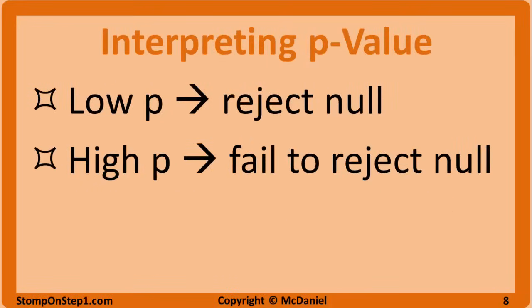The p-value is a measurement to tell us how much the observed data disagrees with the null hypothesis. When the p-value is very small, there is more disagreement of our data with the null hypothesis, and we can begin to consider rejecting the null hypothesis — saying there is a real difference between the groups being studied. When the p-value is very low, our data is incompatible with the null hypothesis and we will reject it. When the p-value is high, there is less disagreement between our data and the null hypothesis, meaning it is more likely that the groups being studied are the same, and we will likely fail to reject the null hypothesis.